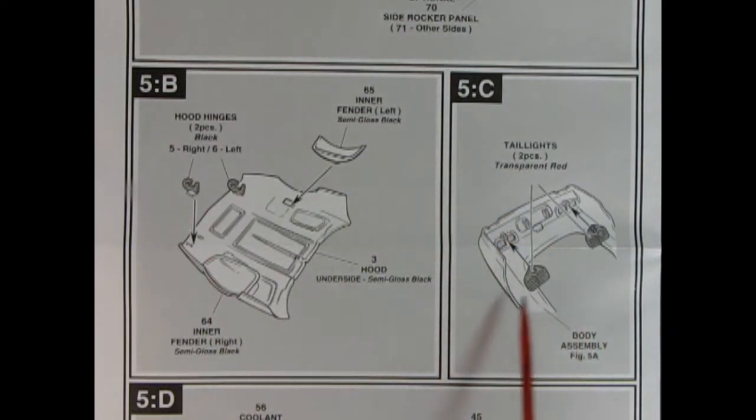Now, panel 5C shows our tail lights being put in. There's a hole here and a little pin there. Little pin, little hole, little glue and it all go together.